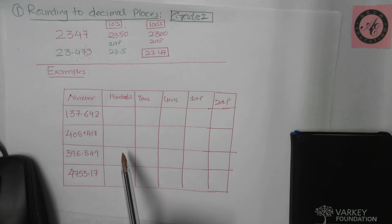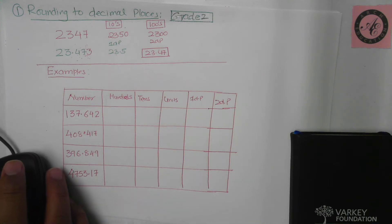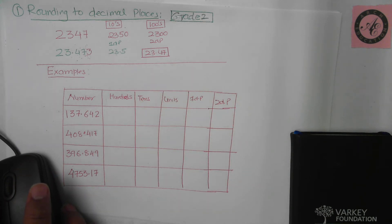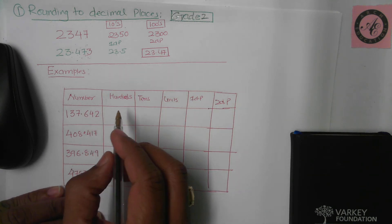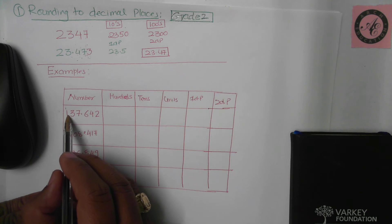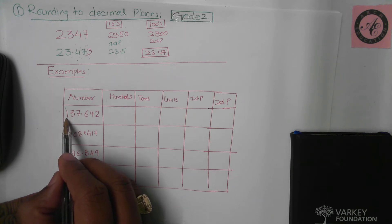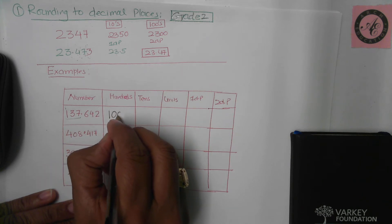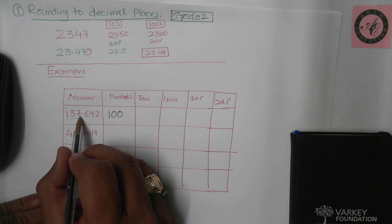Here are some questions for you to try. Copy this table, pause the video, and work out the answers, then check with me. The first one: rounding to the hundreds place. We check the next digit, which is three. Three is in the category of four and below, so keep it down low — the hundred stays as hundred. So 137 rounded to the nearest hundred is 100.